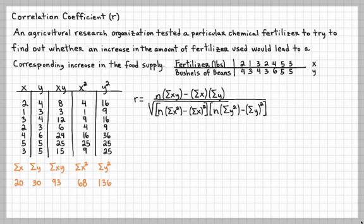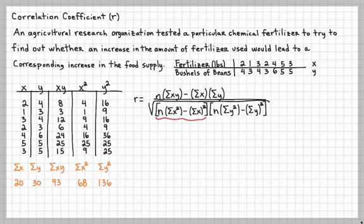An important point: the best way to do this problem is step by step. After you substitute, multiply the terms out and perform the subtractions. Notice there are brackets in the denominator — after placing the numbers, multiply, square, then subtract. It's very important to do this step-wise. Also, don't forget to take the square root at the end — that's sometimes forgotten.